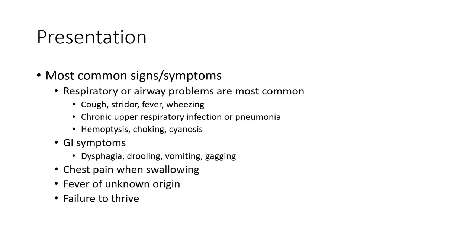Most common signs and symptoms: respiratory or airway problems are more common, including cough, low-grade fever, wheezing, chronic upper airway infection or pneumonia, hemoptysis, choking, and sinusitis. GI symptoms include dysphagia, drooling, vomiting, gagging, and chest pain when swallowing. Fever of unknown origin may also be present.